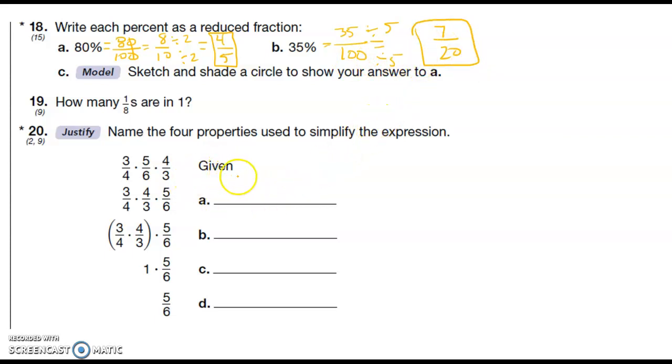Sketch and shade a circle to show your answer to a. Alrighty then, so if I have one that's four, that's five, 4/5. What do they want as 4/5? I'm not sure if that's exactly what they wanted but that's what we're giving them.